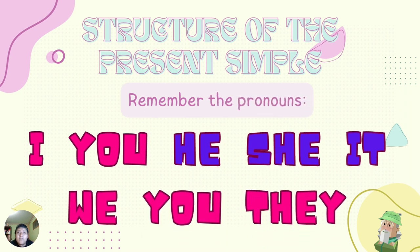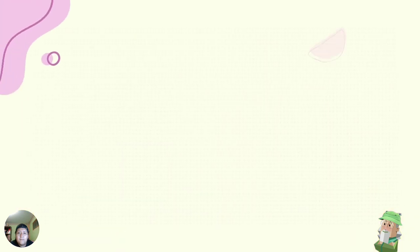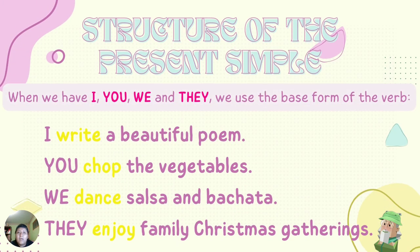Structure of the present simple. Now remember the pronouns: I, you, he, she, it, we, you, and they. When we have I, you, we, and they, we use the base form of the verb. For example: I write a beautiful poem. You chop the vegetables. We dance salsa and bachata. They enjoy family Christmas gatherings.